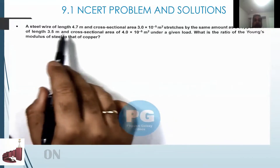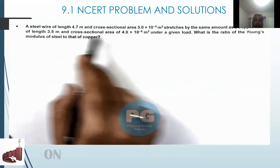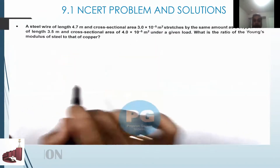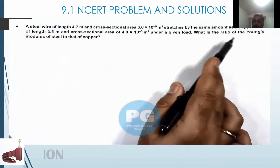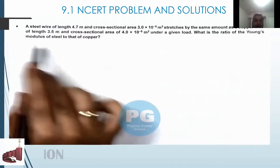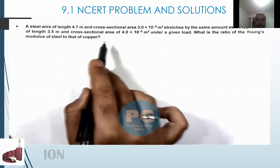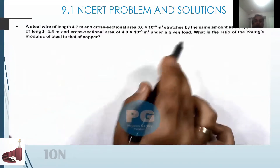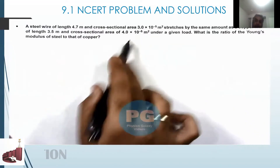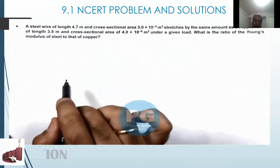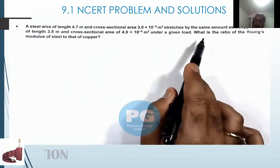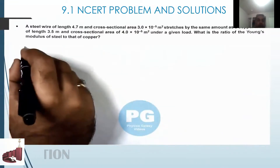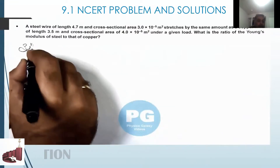A steel wire of length 4.7 metres and cross-sectional area 3×10⁻⁵ m² stretches by the same amount as a copper wire of length 3.5 metres and cross-sectional area 4×10⁻⁵ m² under a given load. The load is the same in both situations. We are required to find the ratio of the Young's modulus of steel to that of copper.